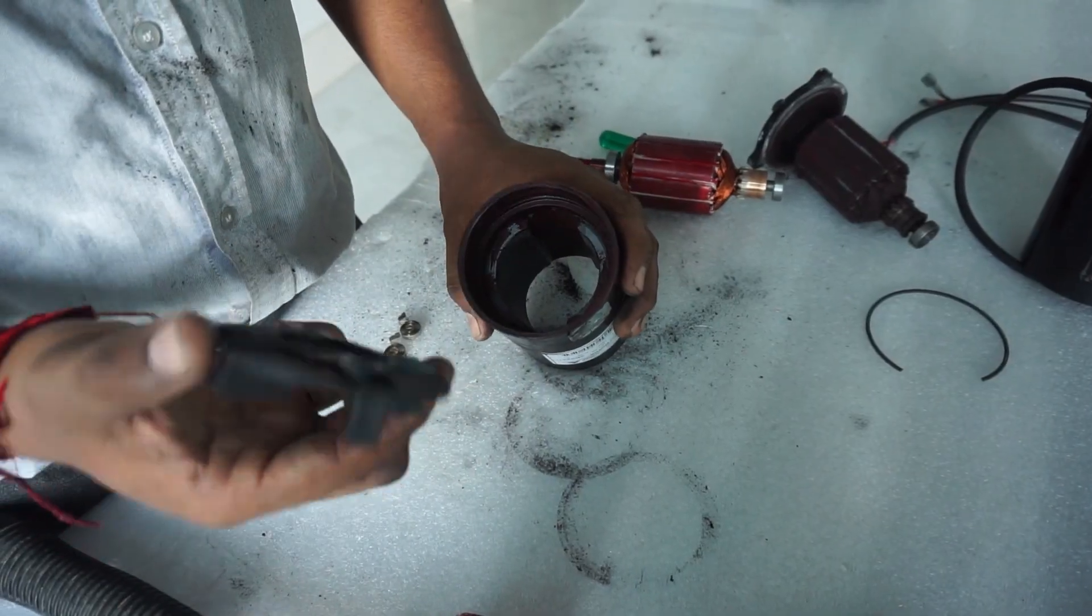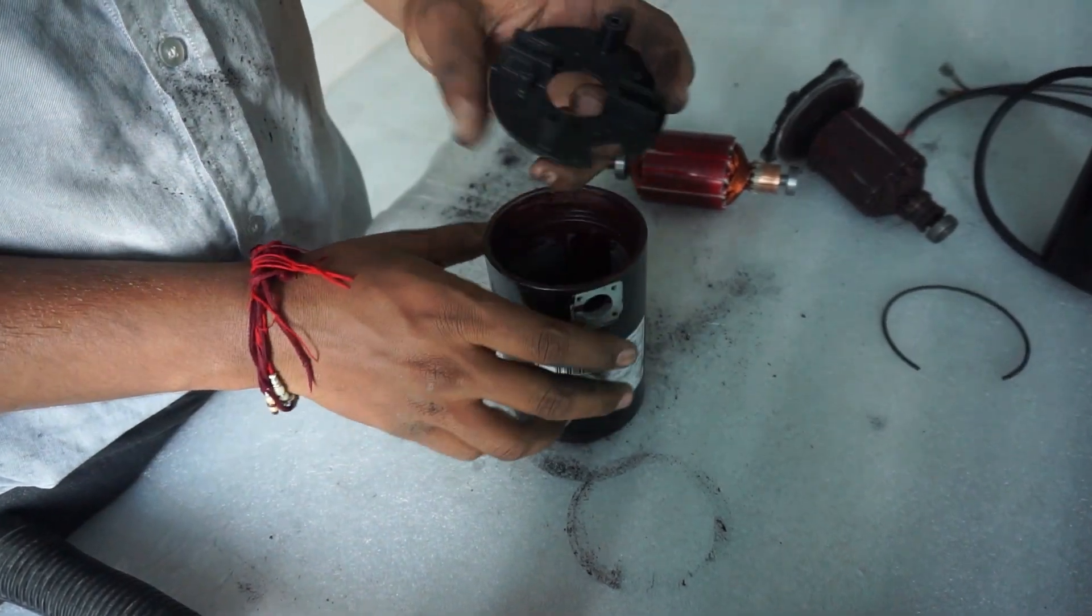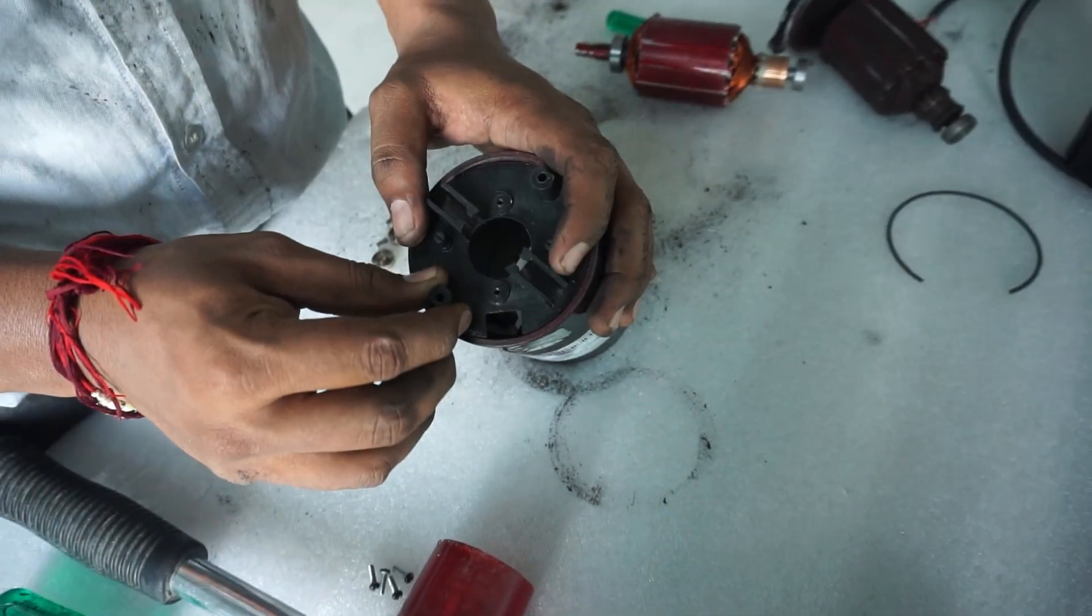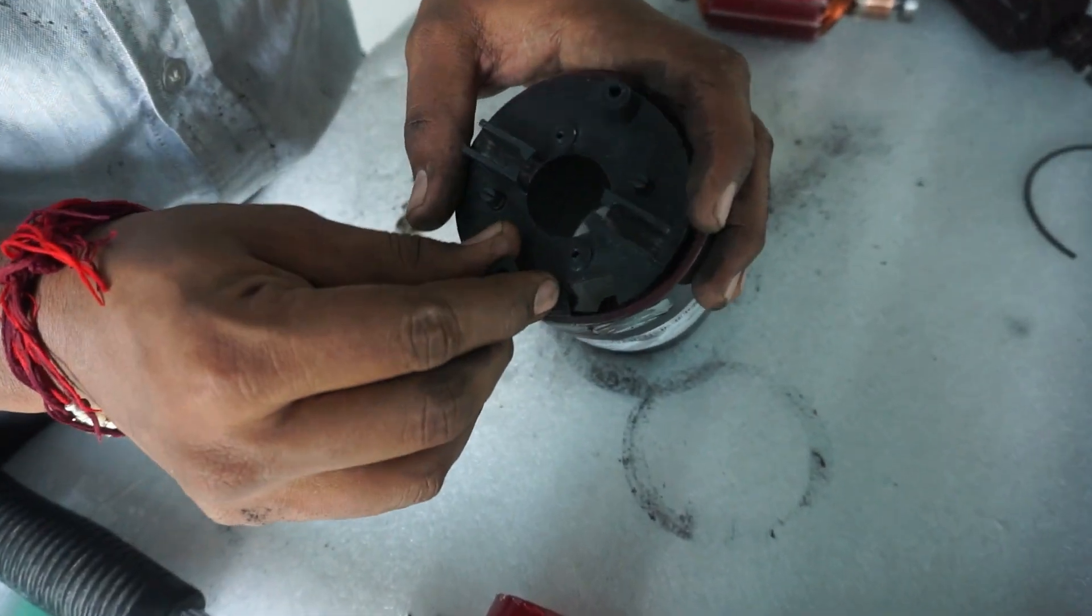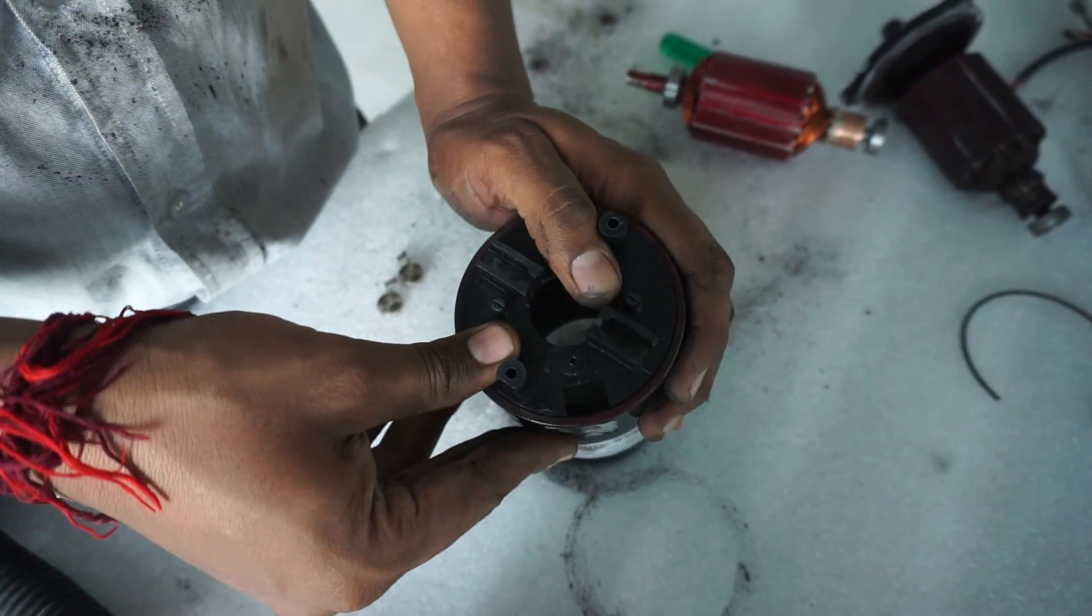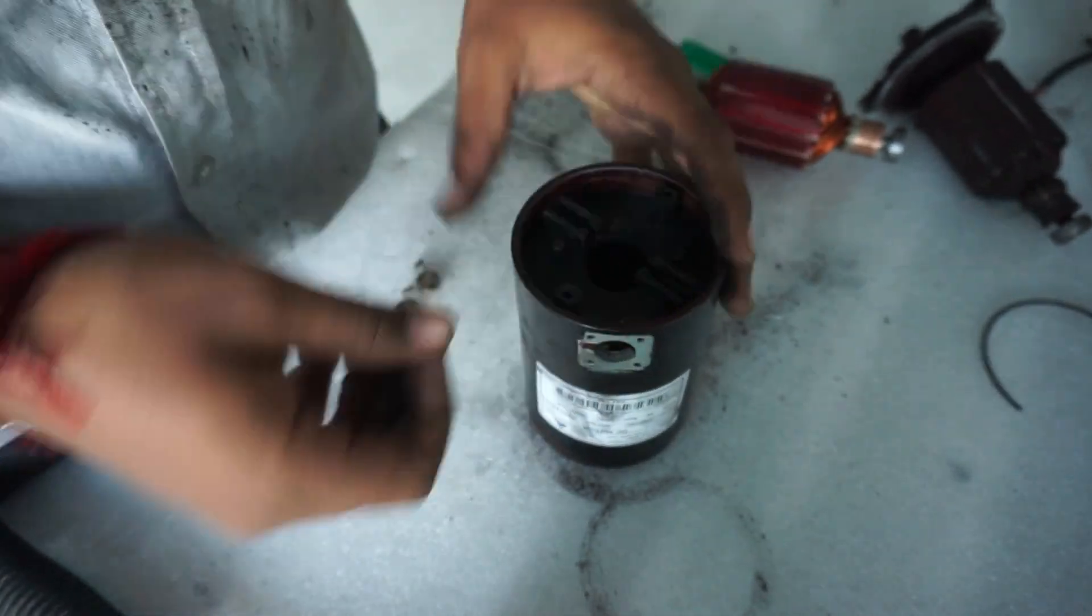Let's reassemble the motor. We start by placing the brush holder plate back into its position. Make sure the hole in the carbon brush holder plate matches with the hole in the motor shell. Push it to the left or right, once it's in its slot, to completely align the slot.